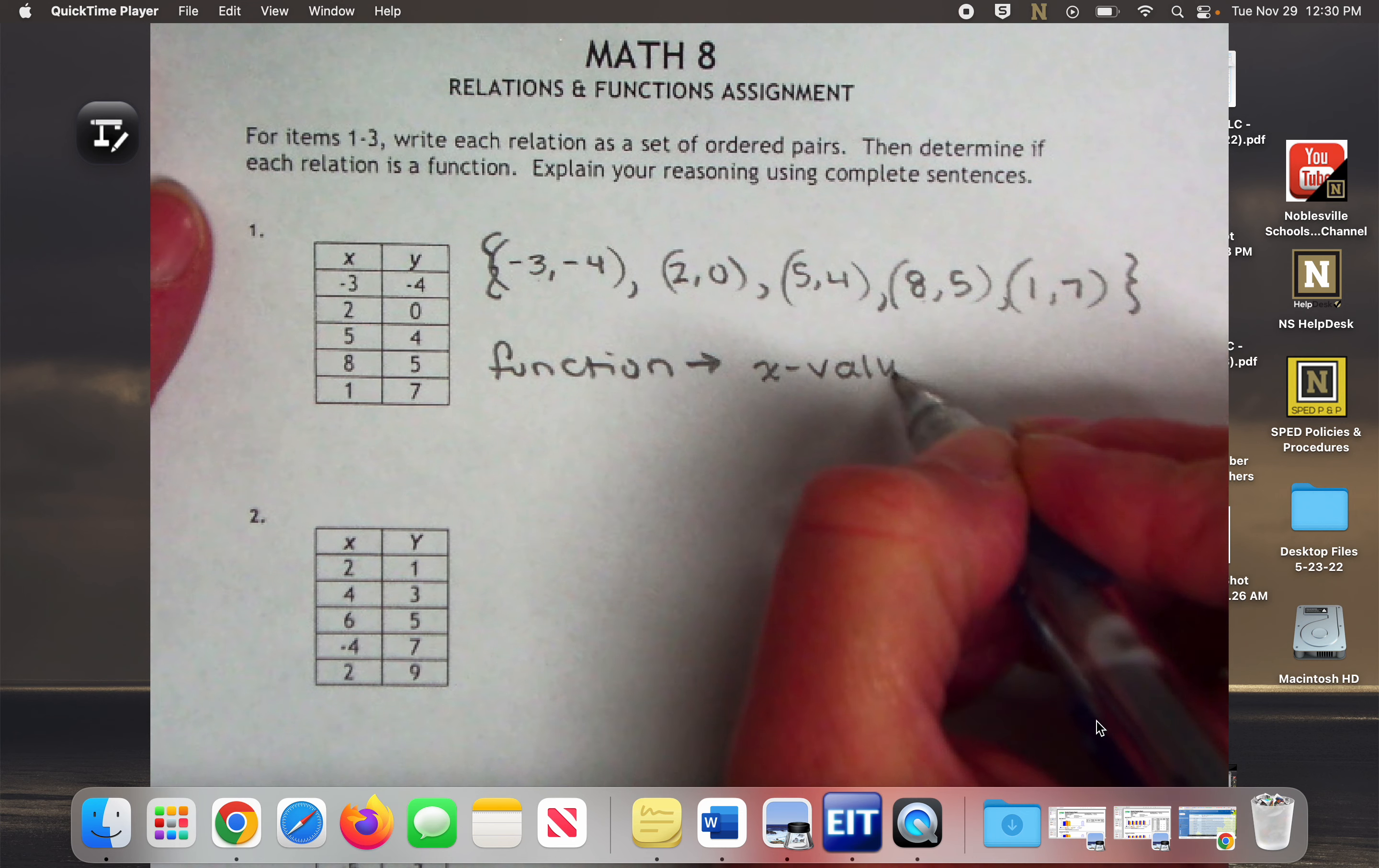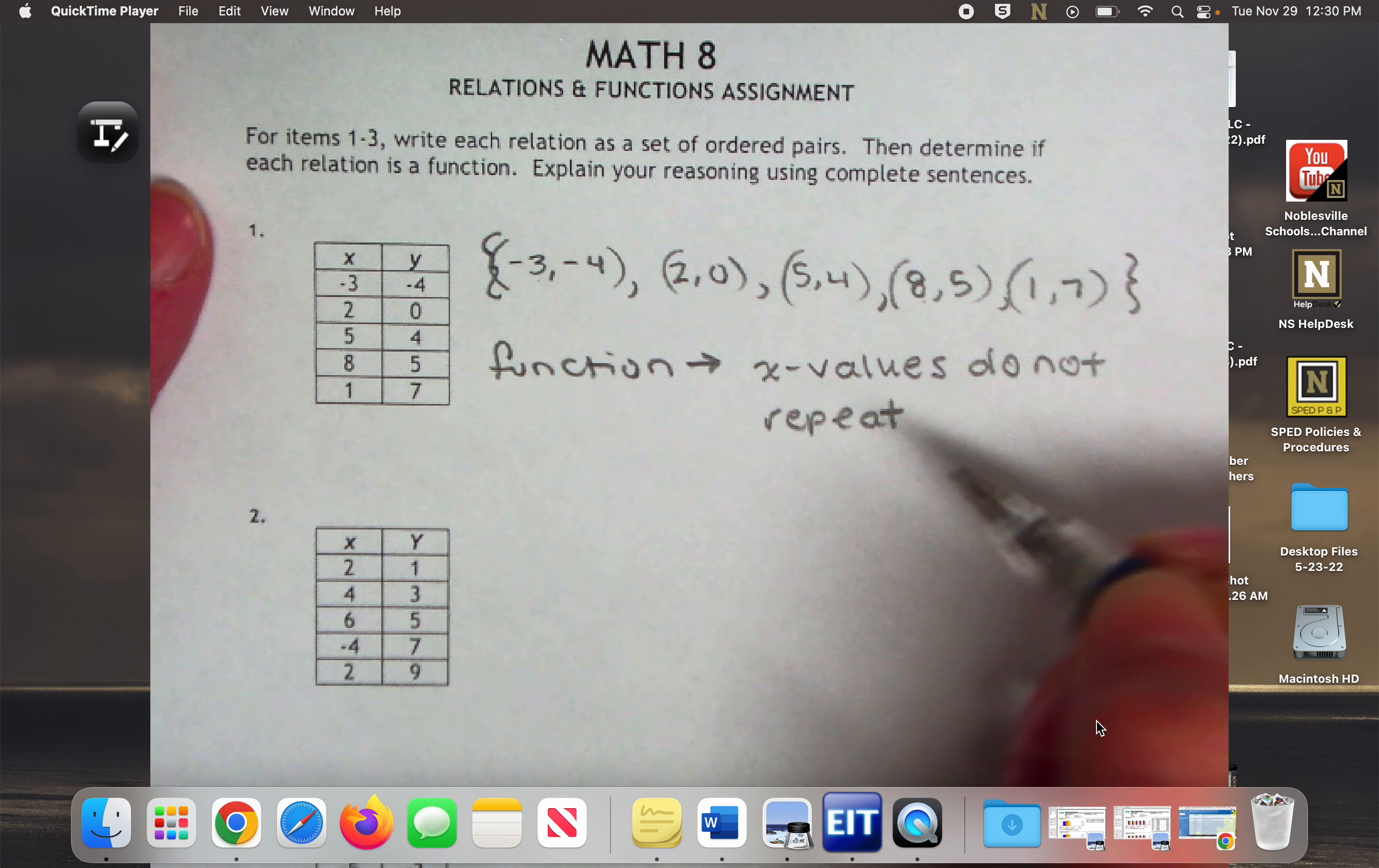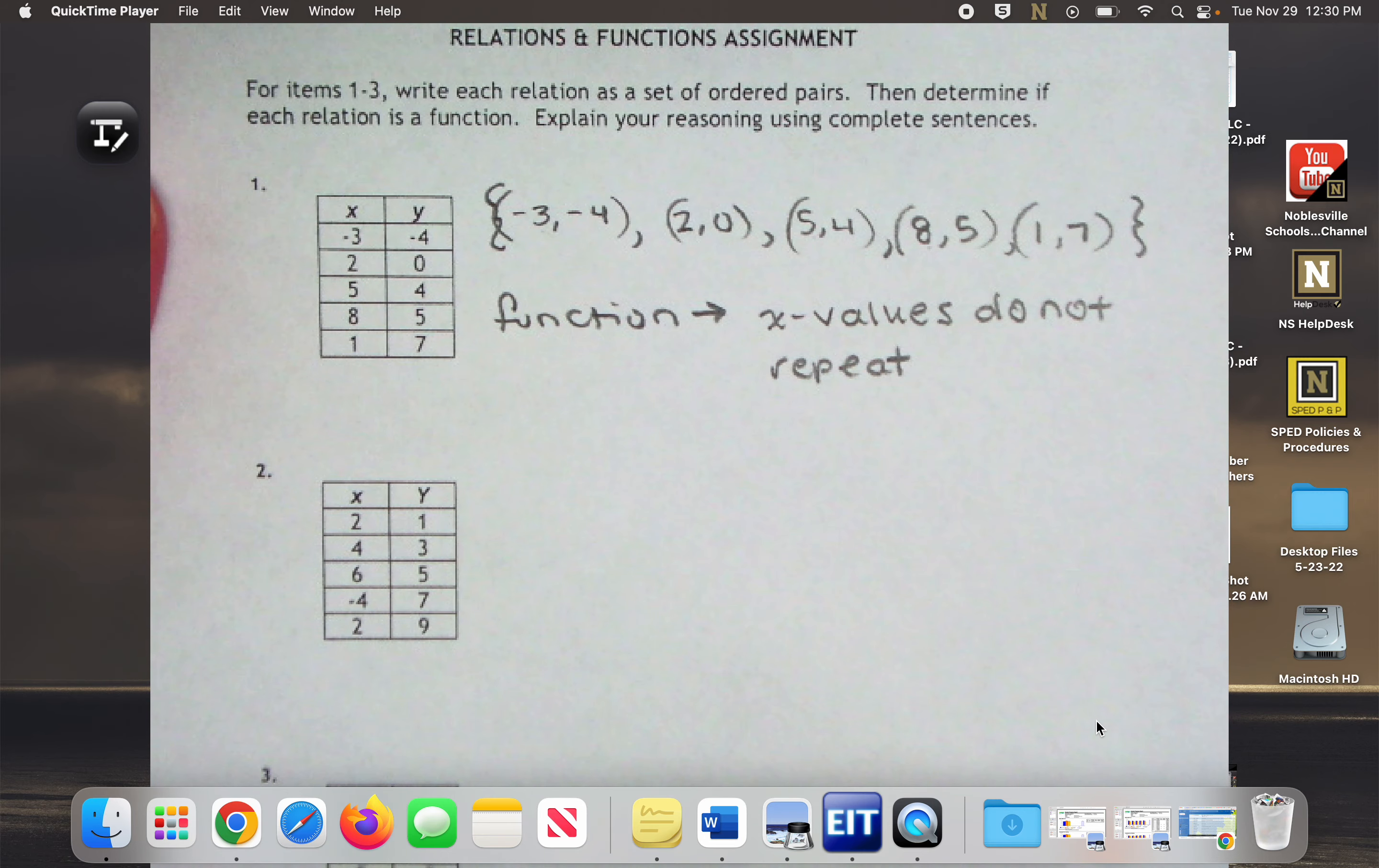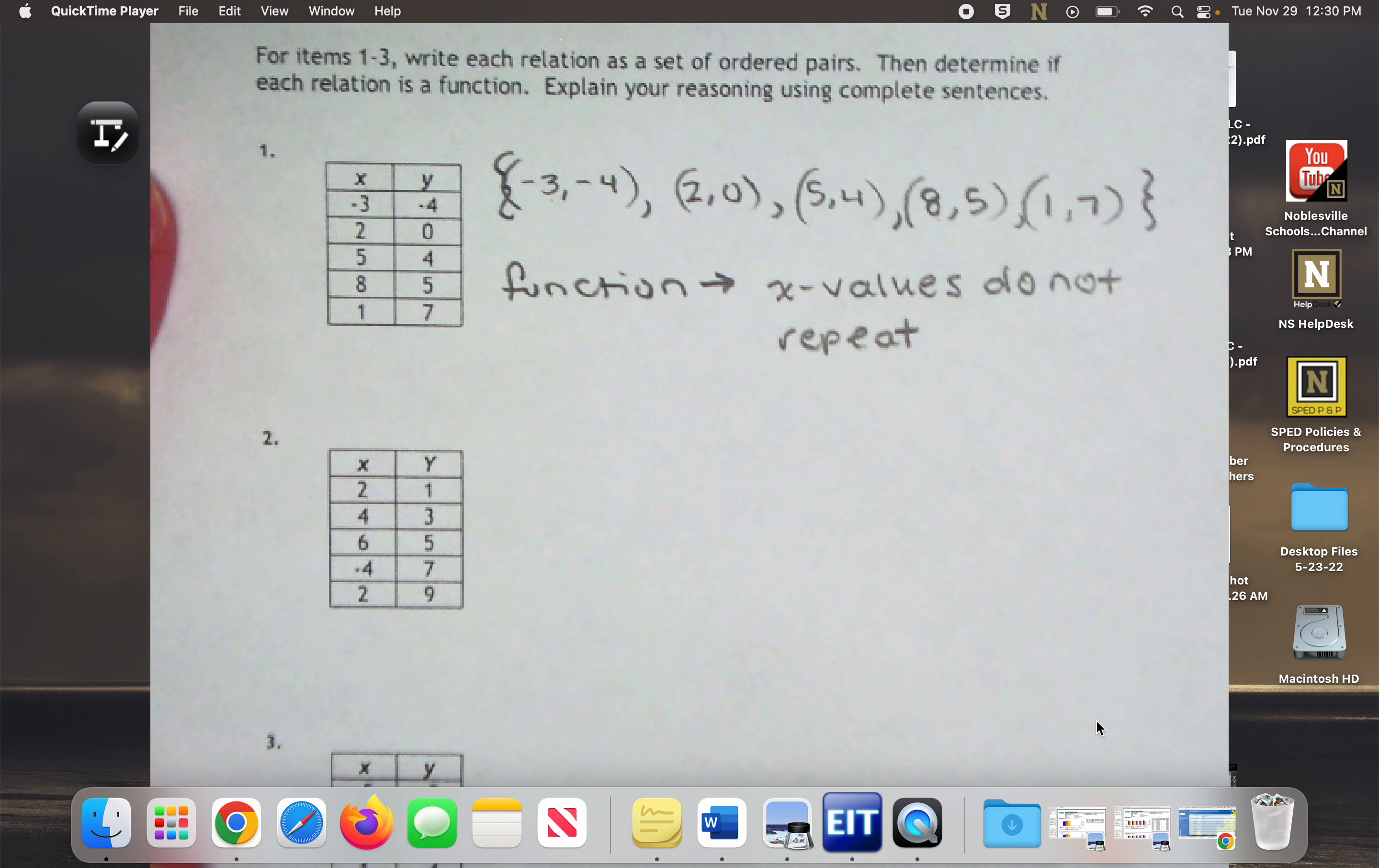Yeah, so right now it's just ordered pairs. There's no like rule or function. Yes. Doesn't matter. Yep, y values we're completely ignoring right now.